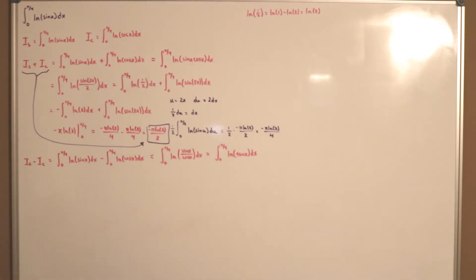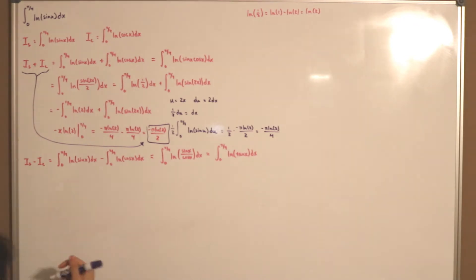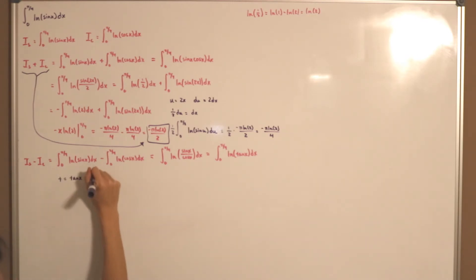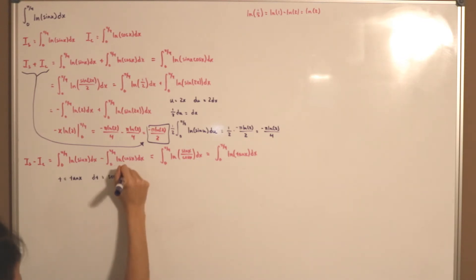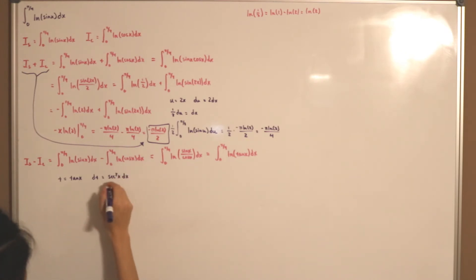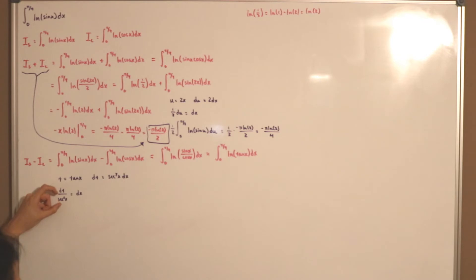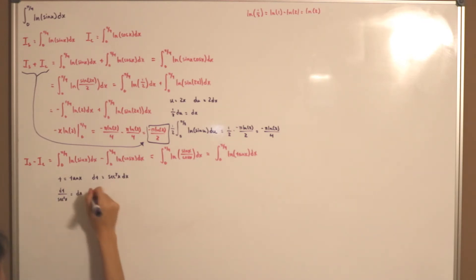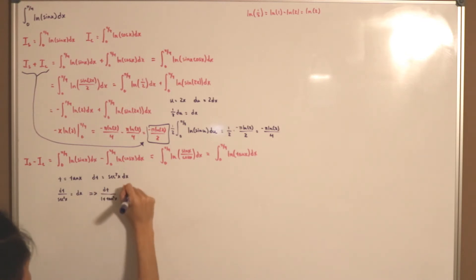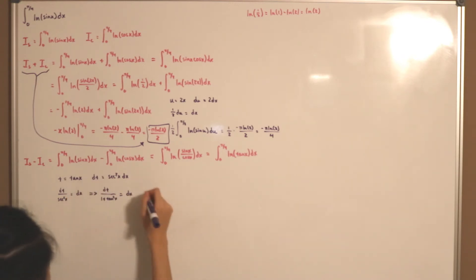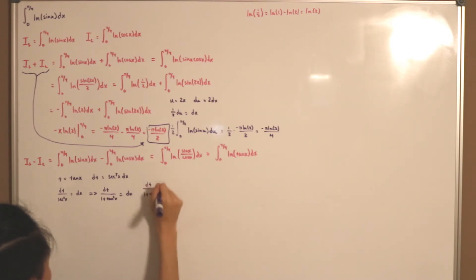I'm going to do another substitution. Let t = tan x, then dt = sec²(x) dx. Dividing both sides by sec²(x), we get dx = dt / sec²(x). We can rewrite sec²(x) using the identity sec²(x) = 1 + tan²(x), and since t = tan x, we get dx = dt / (1 + t²). Changing the bounds: when x = 0, t = 0; when x = π/4, tan(π/4) = 1, so t = 1.